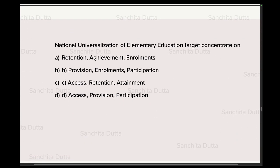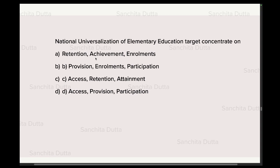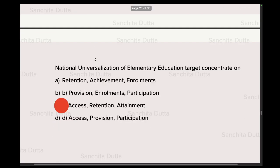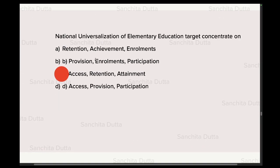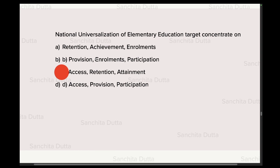Next question: National Universalization of Elementary Education targets concentrate on what? UEE's targets are based on three things: first, access — education should be accessible to all; second, retention — the child should complete the minimum educational level without dropping out; and third, attainment — the child should be able to complete their education. So access, retention, and attainment are the three principles.